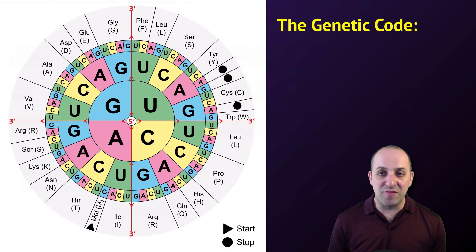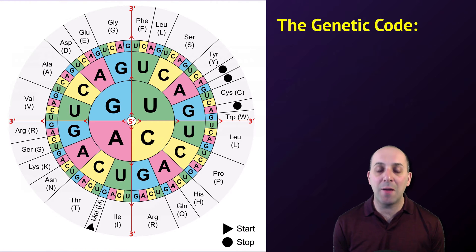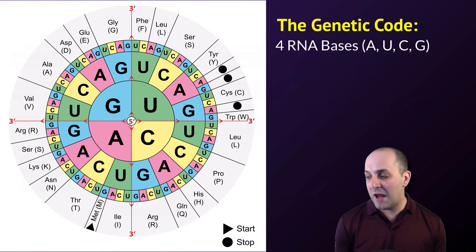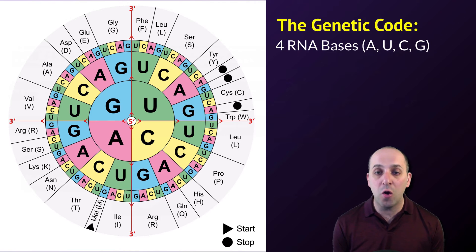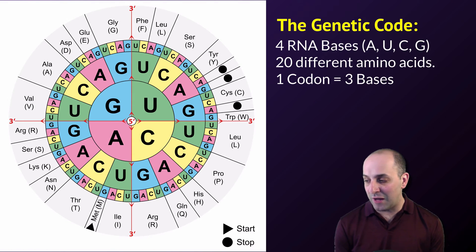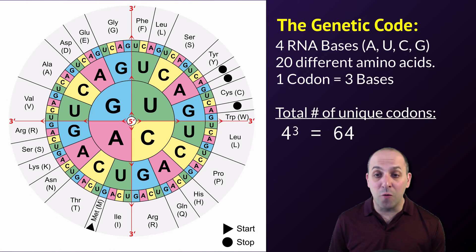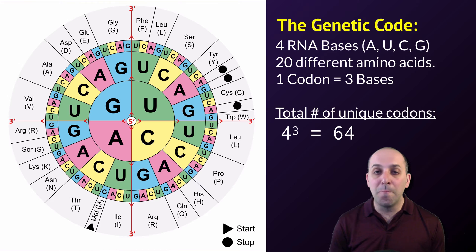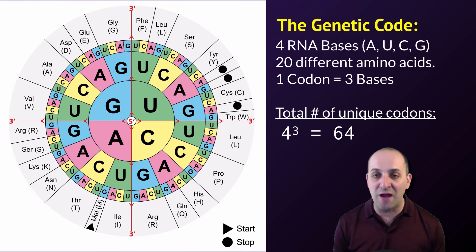Let's take a look at the genetic code specifically and see how it works. This graphic is showing all the possible three-nucleotide combinations that we can see in mRNA codons. There are four different RNA bases — A, U, C, and G — and they need to code for 20 different amino acids. Each codon is three bases in length, so how many unique codons can you have using the four bases? The answer is 64. There are 64 possible unique three-nucleotide combinations that you can see in RNA, which is more than enough to give us at least one codon for each of the 20 amino acids that comprise proteins.